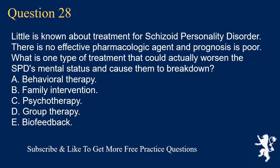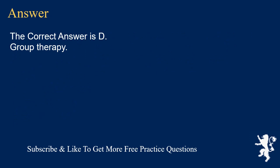Question 28. Little is known about treatment for Schizoid Personality Disorder. There is no effective pharmacologic agent and prognosis is poor. What is one type of treatment that could actually worsen the SPD's mental status and cause them to break down? A. Behavioral Therapy. B. Family Intervention. C. Psychotherapy. D. Group Therapy. E. Biofeedback. The correct answer is D. Group Therapy.